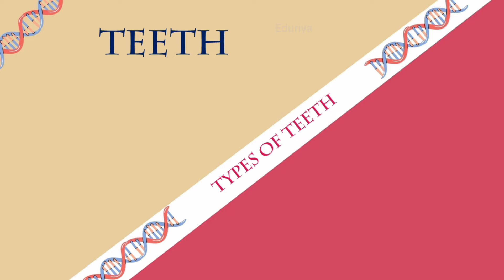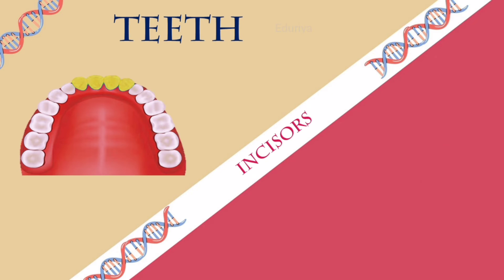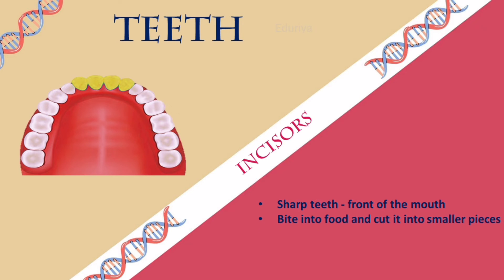Now let's see the types of teeth. Humans have the following types of teeth. Incisors are the sharp teeth at the front of the mouth that bite into food and cut it into smaller pieces. They are flat with a thin edge and are also called anterior teeth. Both children and adults have eight incisors — four central incisors at the front of the mouth, two on each row.